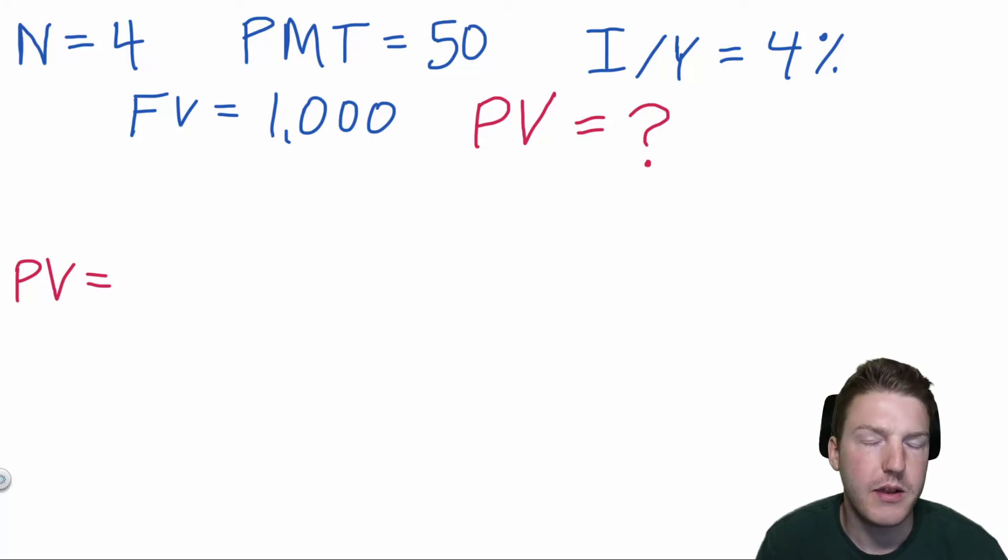So let's start with how to price a bond. We're going to need four inputs for this. The first one I have here is N equals 4. This is just the number of years of this bond, so we're going to say four years.